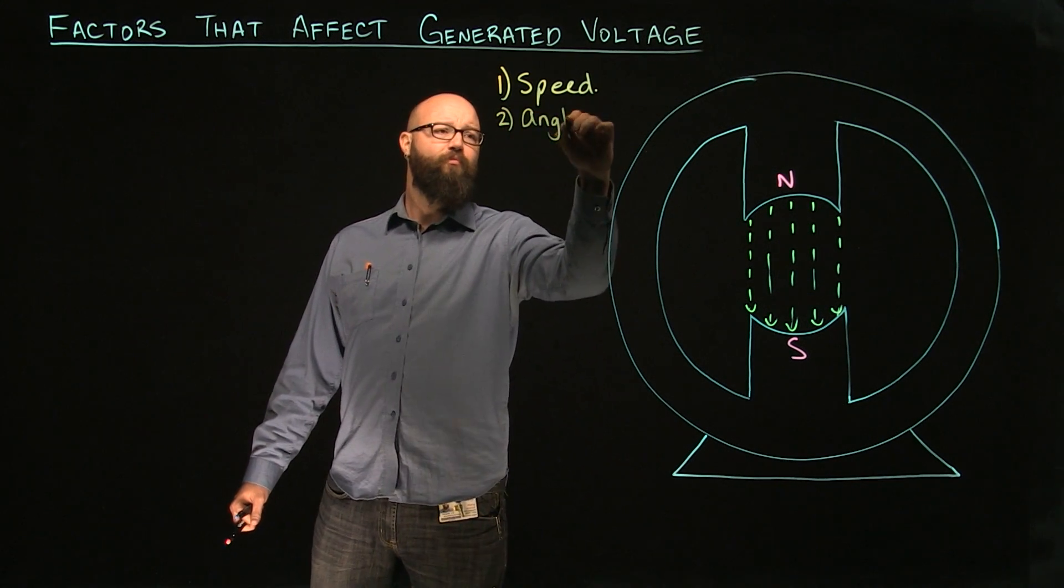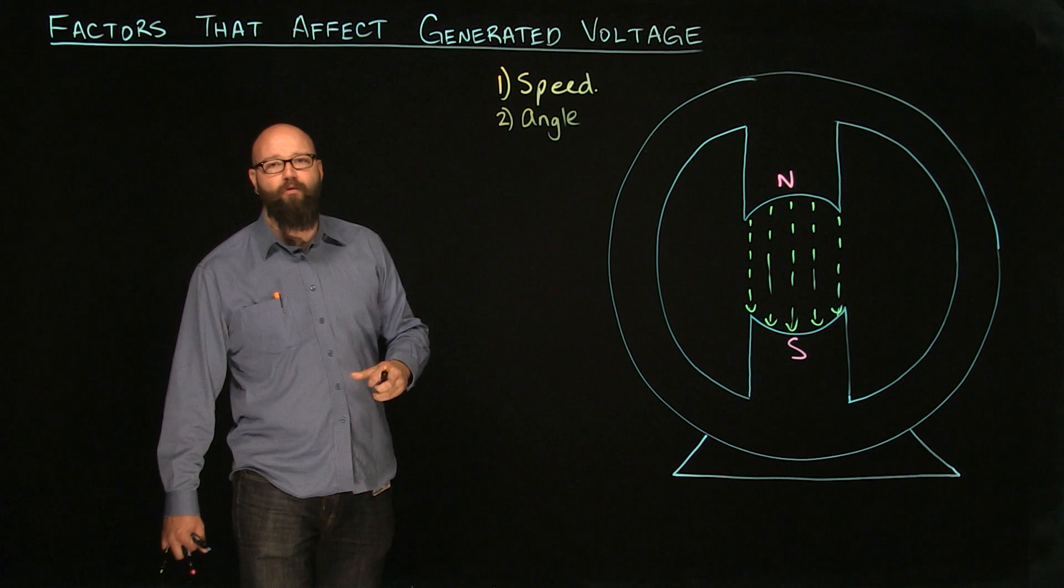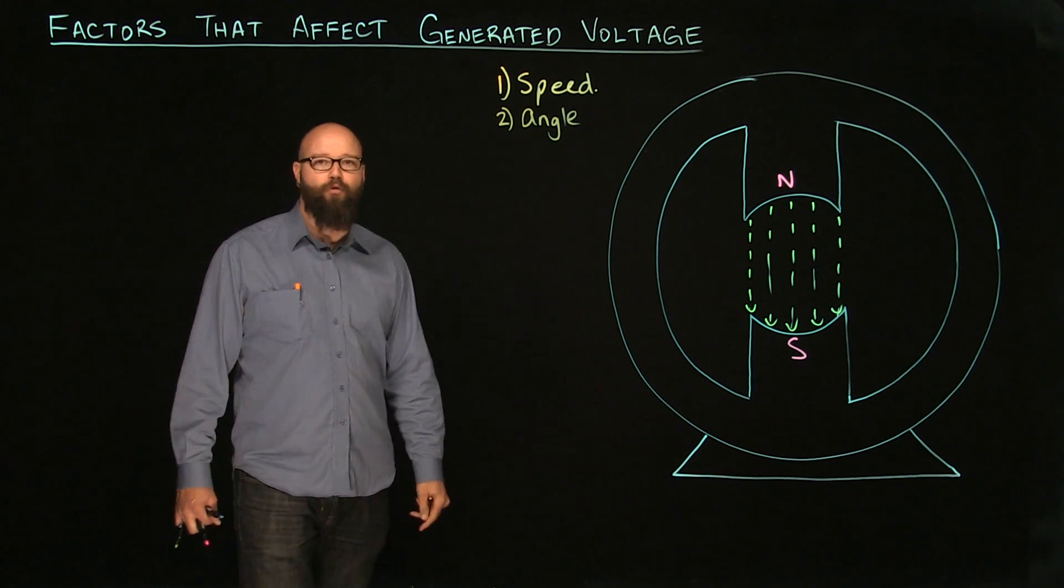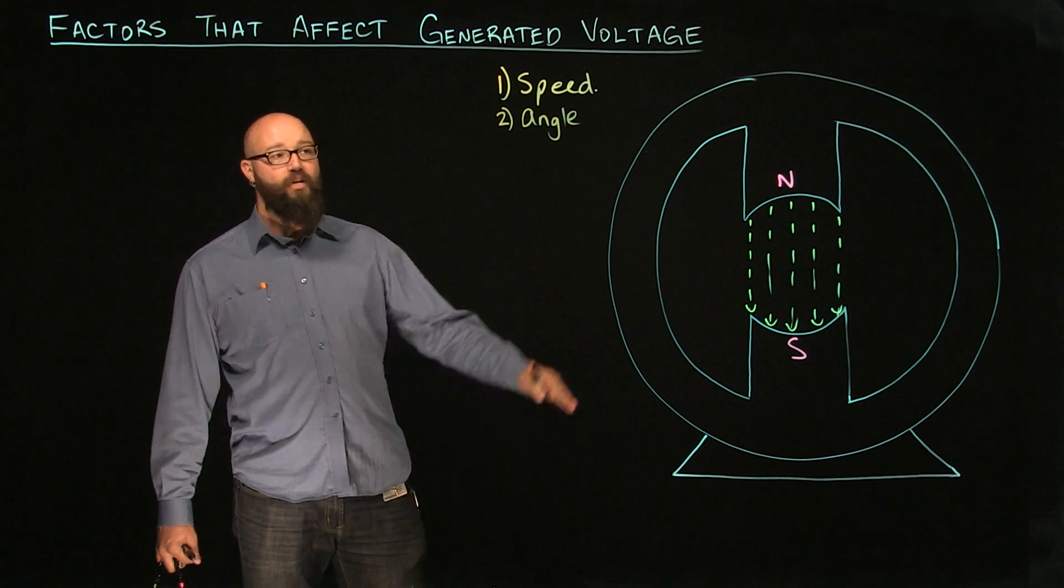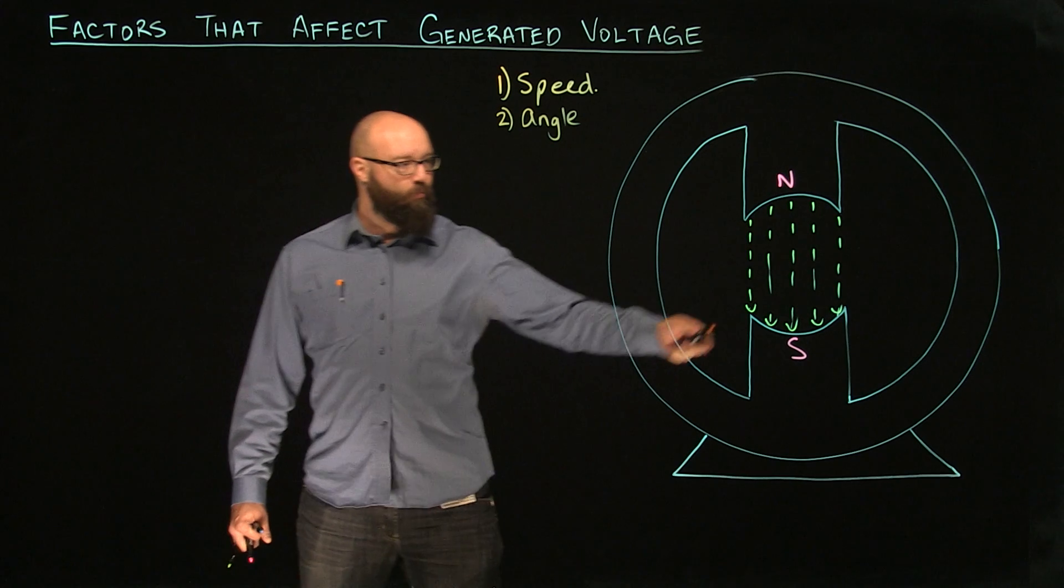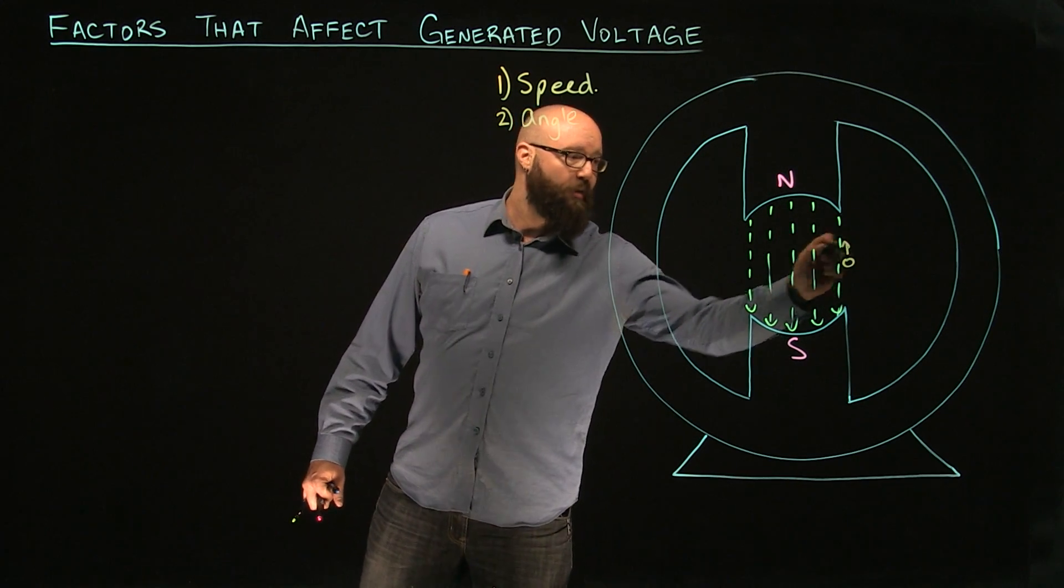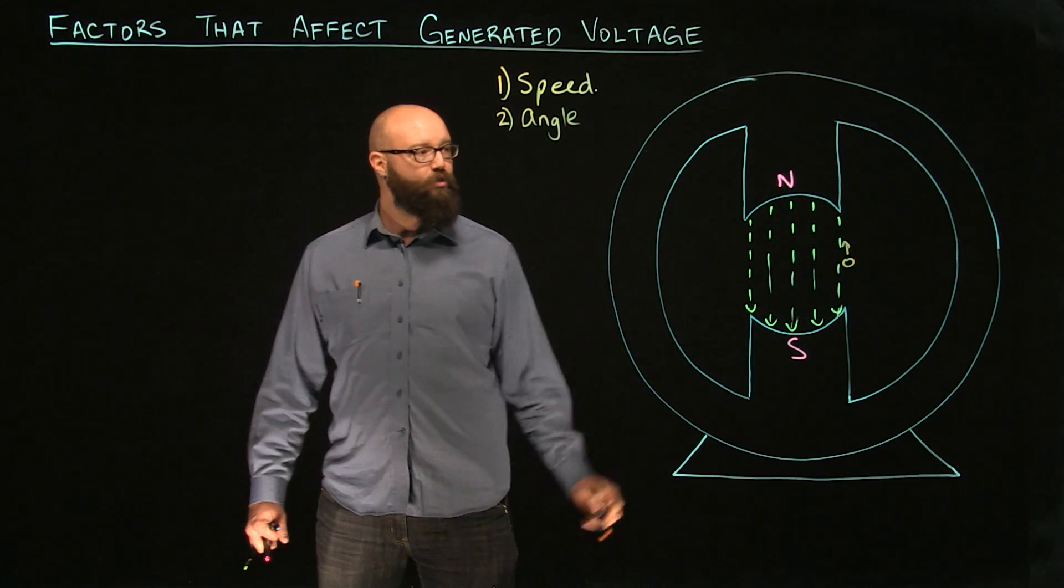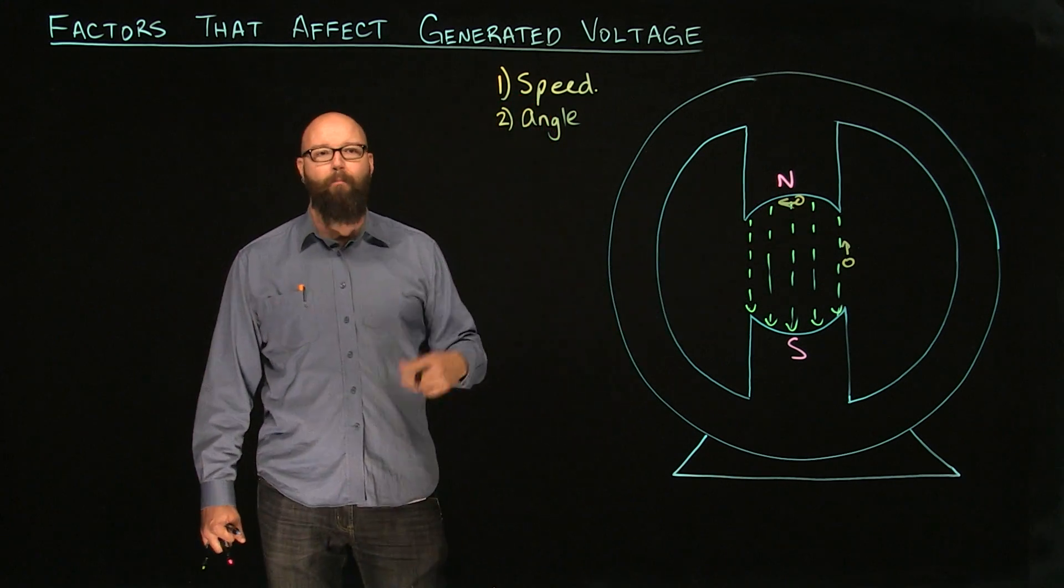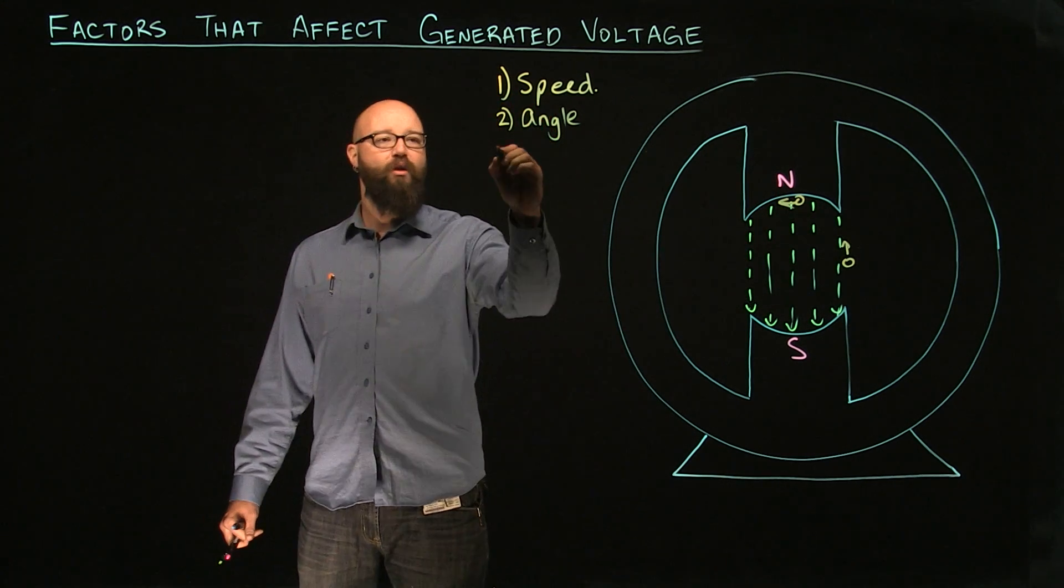Two, angle. We also talked last time about that conductor cutting at a 90 degree angle to those lines of force was inducing the most voltage. So the higher the angle, the more induced voltage we're going to get. When we were cutting right here, moving parallel to the lines of force, we got no induced voltage. When we were here and moving 90 degrees through those lines of force, we were getting maximum voltage.